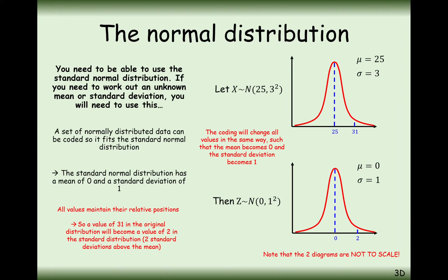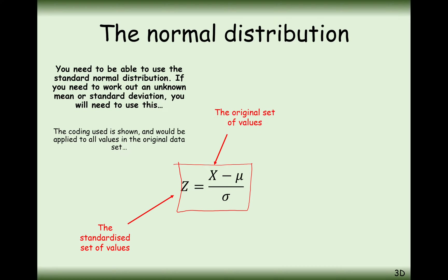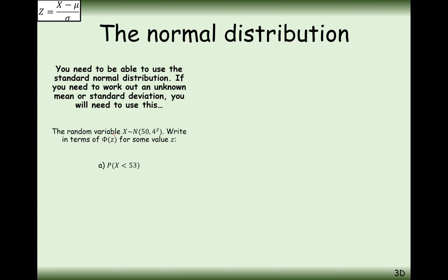It was only really a couple of years ago that we were still working out probabilities for the normal distribution by this kind of table of values. Here is the coding: from the original data in the question you're working with, we use z as the letter for the standard normal distribution. For any x value in your normal distribution, you take away the mean and divide by the standard deviation to get your z value. It's this Greek letter phi that represents the probability from a standard normal distribution table.